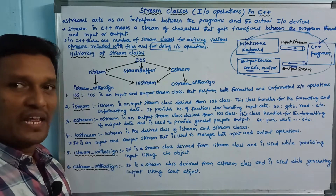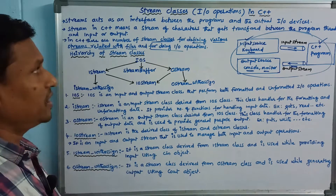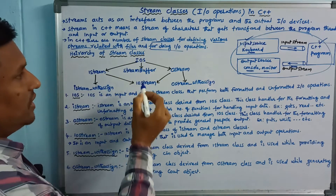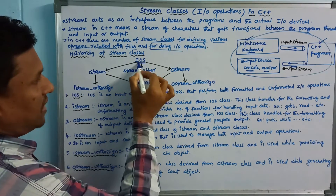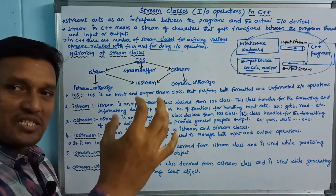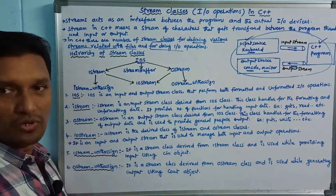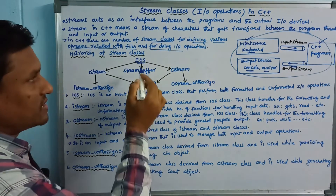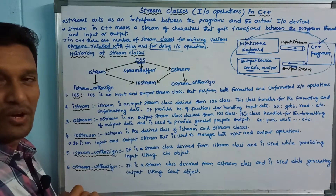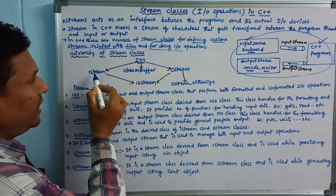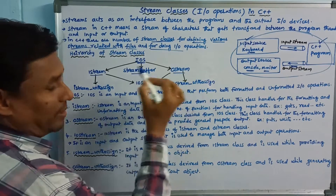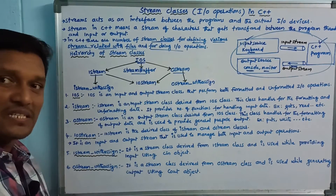We will look at the hierarchy of stream classes. First, IOS is the base class. From IOS, three classes are derived: istream, streambuf, and ostream.